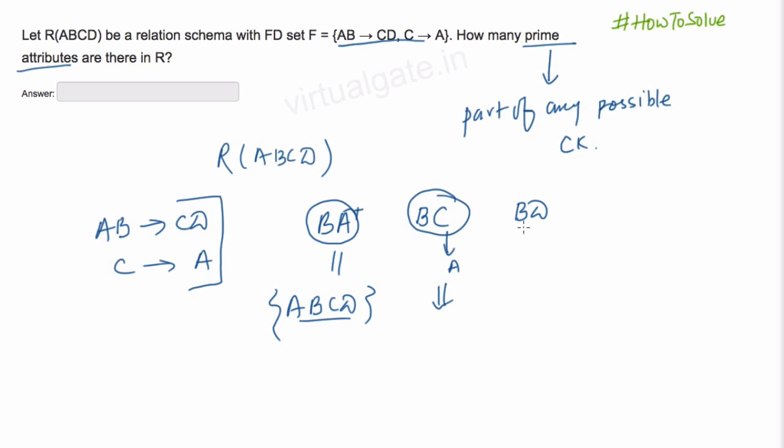Now B, D. From B, D we cannot derive anything because we do not have any functional dependency starting with B, D. So it cannot be a candidate key. So we have two possible candidate keys here, that is A, B and B, C.